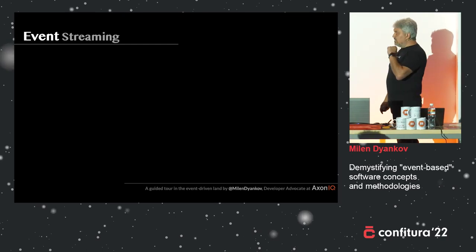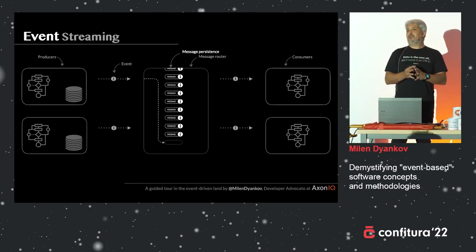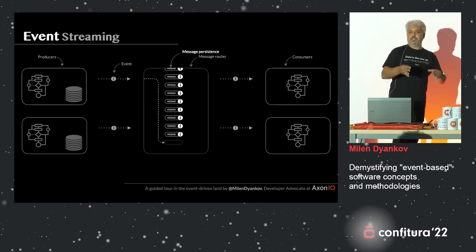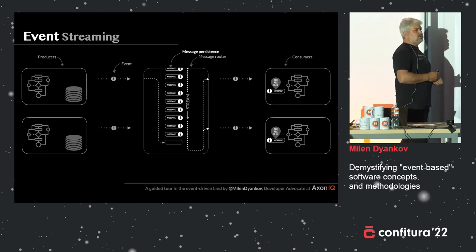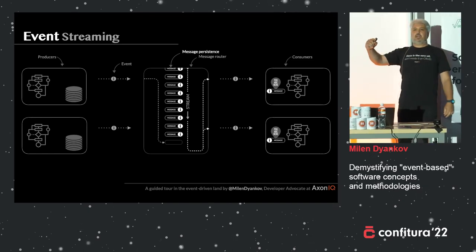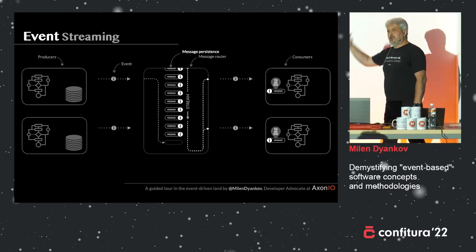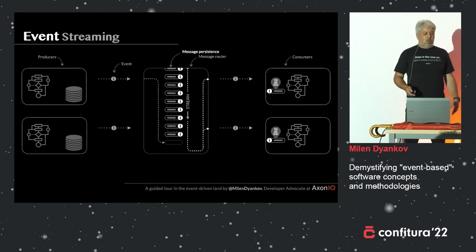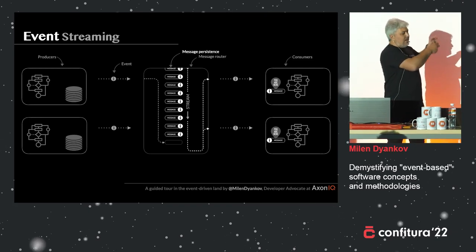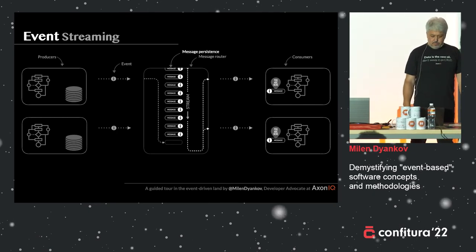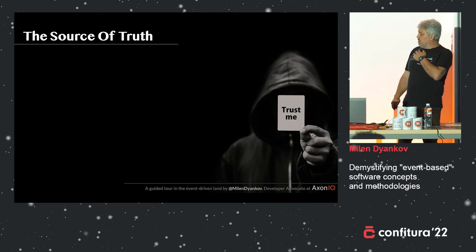The way to fix that is event streaming. The idea is: we have this message router, so let's be smart and make the message router store the data — every message that goes through the router, we store persistently. Essentially we create a stream of messages. Consumers need to track their position in the stream — they can say 'I've read so many messages' — and they can go on and off and disappear and reappear. Every time they reappear, they say: this is how many messages I've read, give me the rest. So in this case, what consumers have becomes a local copy of the data consumed from the stream. Kafka can do this.